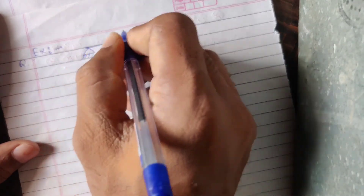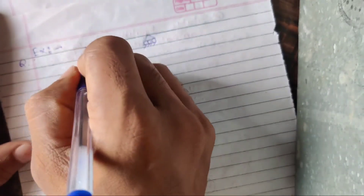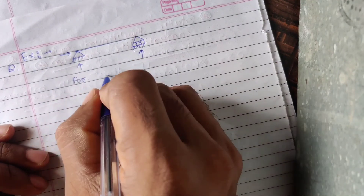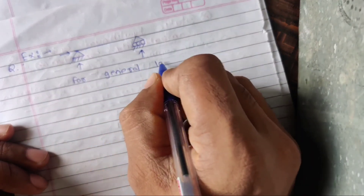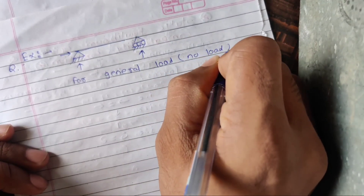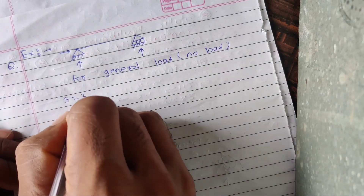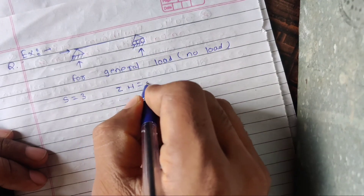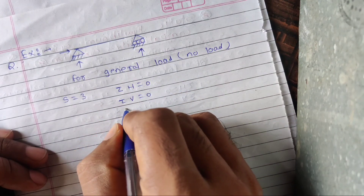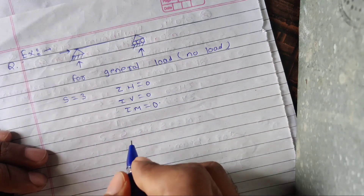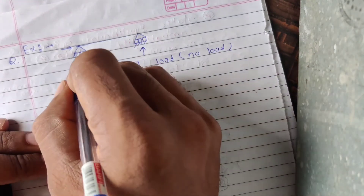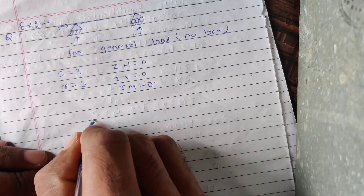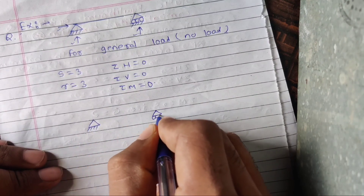Take one example to understand it clearly: one beam with one hinge support and one roller support. For a hinge there are two reactions — horizontal and vertical. If we consider general loading, meaning no purely vertical load, then S = 3 with equilibrium conditions: summation H = 0, summation V = 0, and summation M = 0. The number of reactions is 3: two for hinge and one for roller.